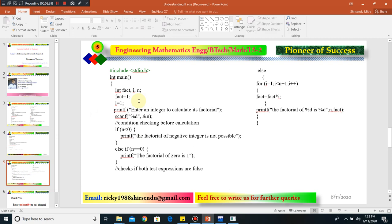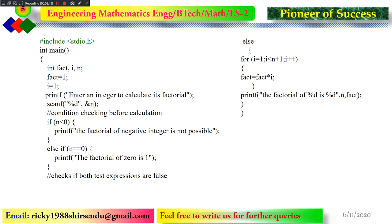Now we go to another program — it also calculates factorial of a number. Up to this point we have learned if-else, if-else ladder, and loops. Now we look at how those things are combined judiciously in a particular code. This code also calculates factorial, but up to now we did not consider that factorial of a negative number is not possible, and we did not consider that factorial of zero is 1.